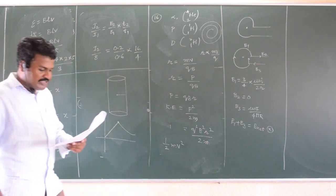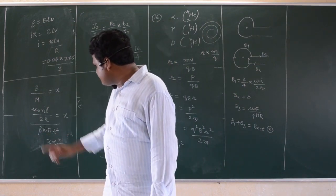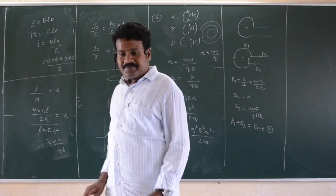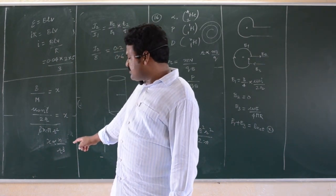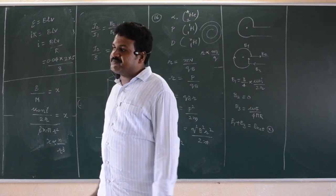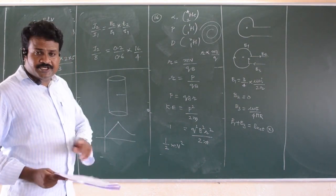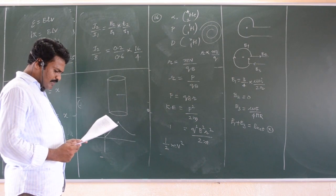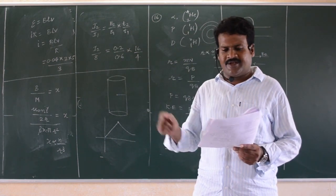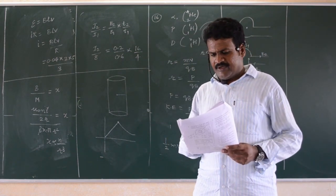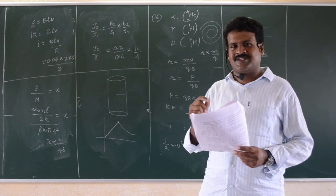In question number 18, current is given in the problem but current is not required since it cancels out. X is proportional to N by R-cubed, so when the radius is doubled, X decreases by eight times. Also, in a permanent magnet at room temperature, the magnetic moment domains are partially aligned — this is clearly stated in your NCERT textbook.